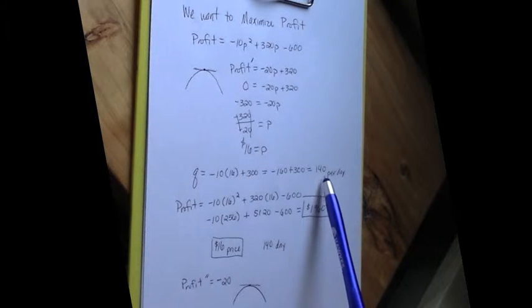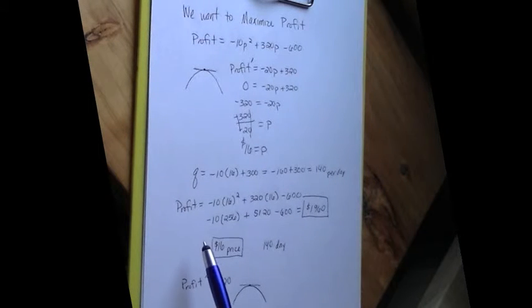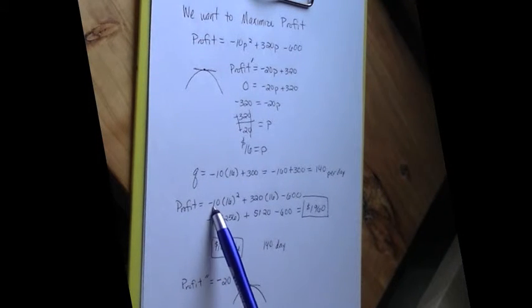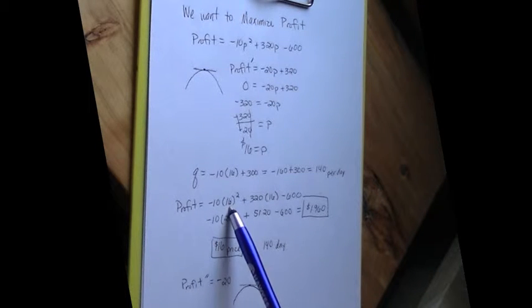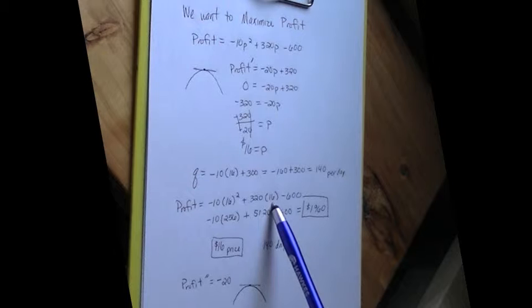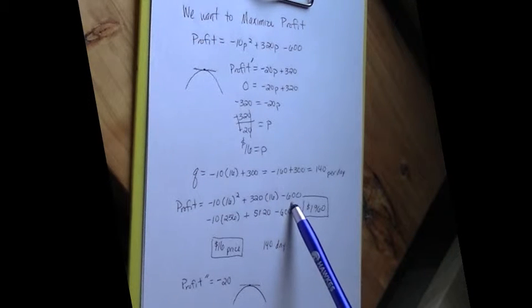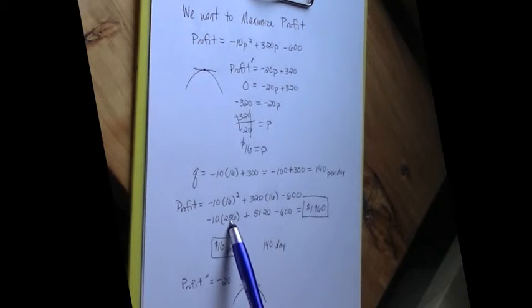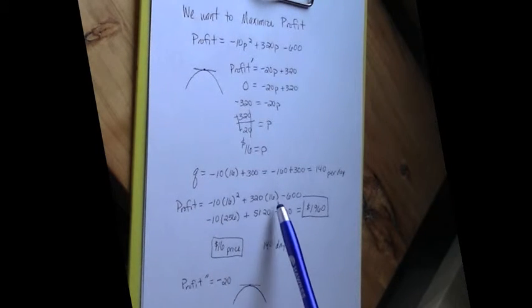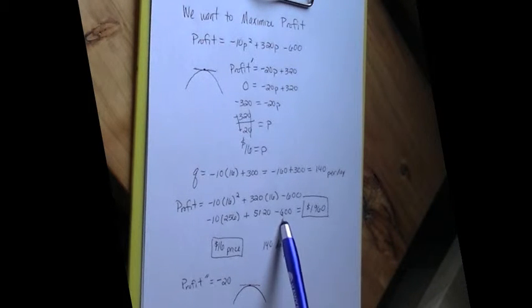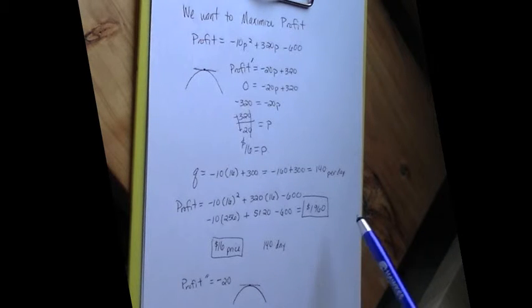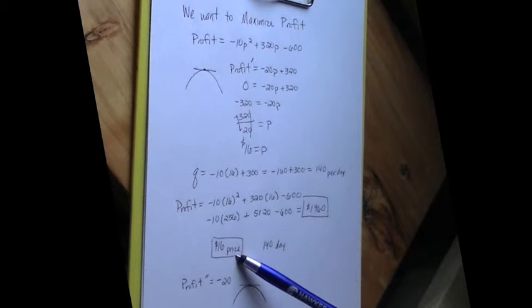That will give me a profit, then, of negative 10 times price squared plus 320 times price minus 600. So negative 10 times $16 squared is 2560. Plus 320 times $16 is 5120. Minus 600 gives me a profit of $1,960 per day because I'm selling 140 per day at a price of $16 each.